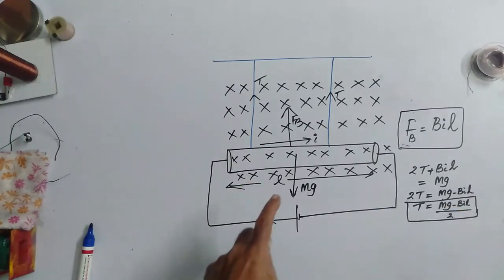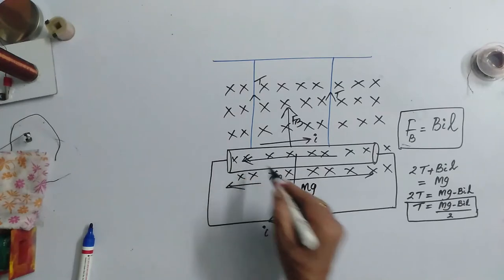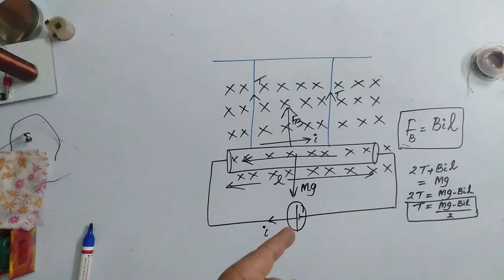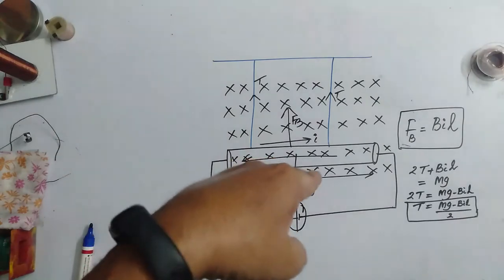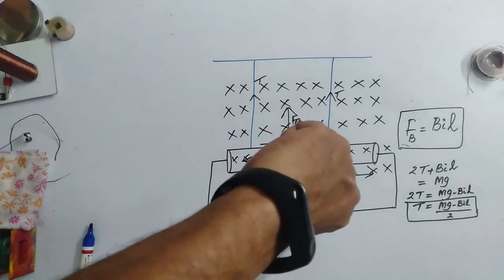Suppose, in this case, if the current is in this direction, that means I am changing the polarity of the battery. In that case, now I have to see the direction of the force experienced by the current carrying conductor. The magnetic field is unchanged. It is into the board only, but here it is changed.